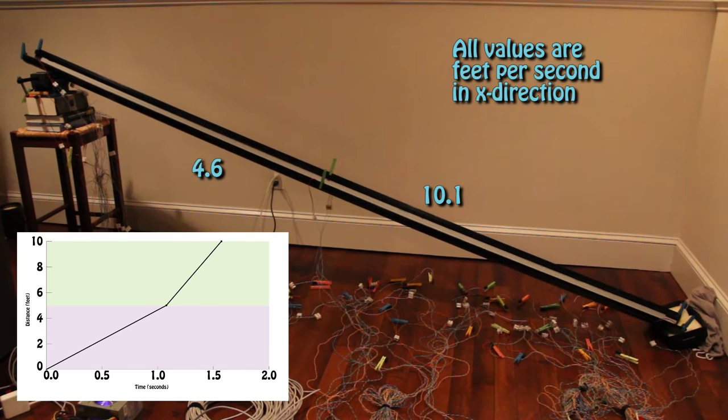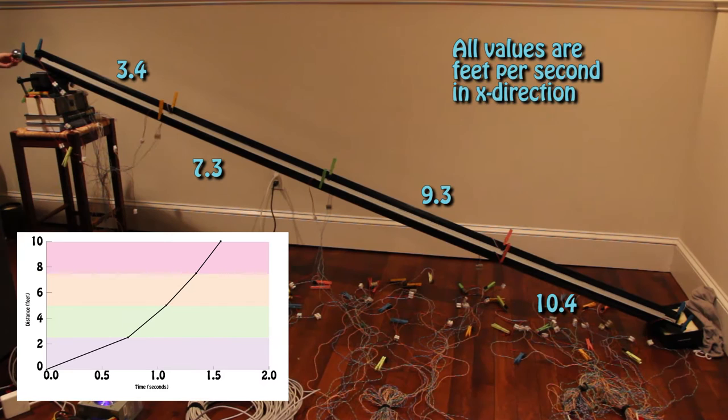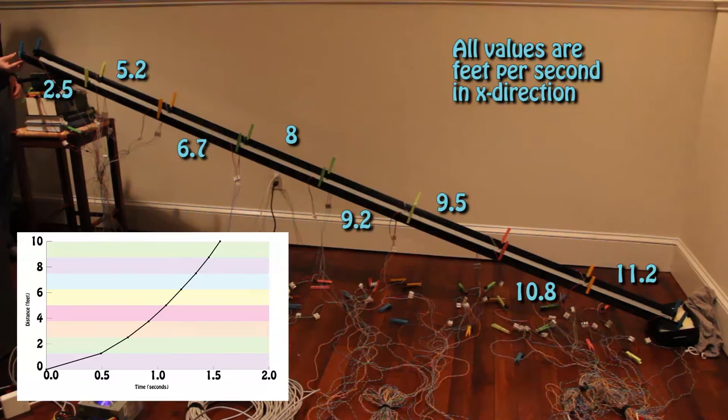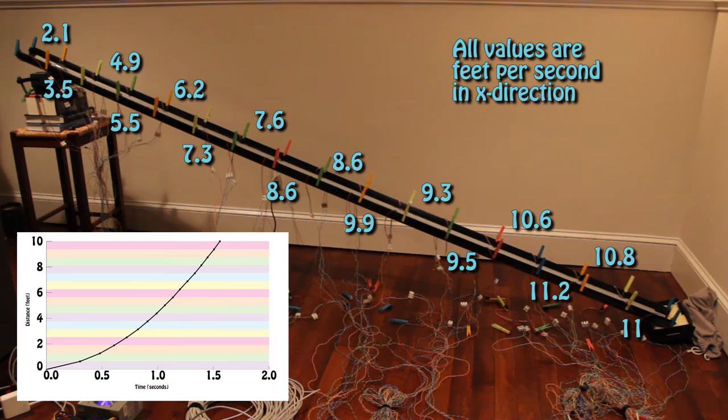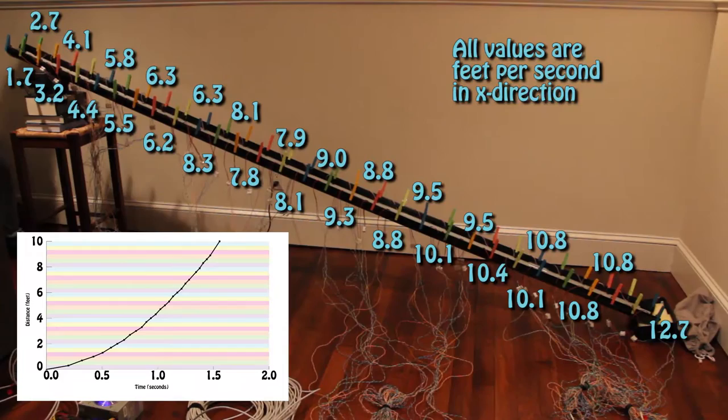We can add another sensor and obtain the average velocity over two sections of the ramp. This gives us a slightly better insight into how the ball is moving. We can keep adding sensors in between the existing ones until we run out. We know the velocity at smaller and smaller sections along the ramp. This gives us a better understanding of the motion of the ball. But we still don't know the velocity at every instance. This is one of Zeno's paradoxes.